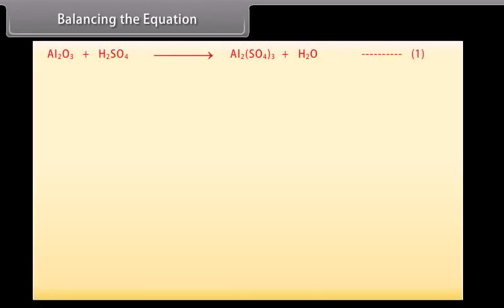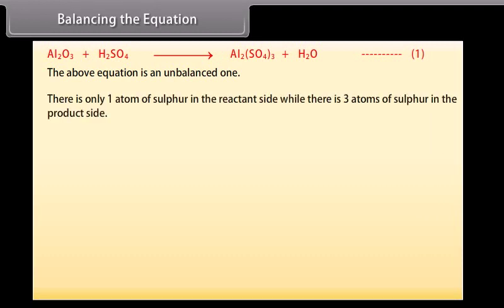Balancing the equation — example. Al₂O₃ + H₂SO₄ gives Al₂(SO₄)₃ + H₂O (equation 1). This equation is unbalanced — there is only one atom of sulfur on the reactant side, while there are three atoms of sulfur on the product side.